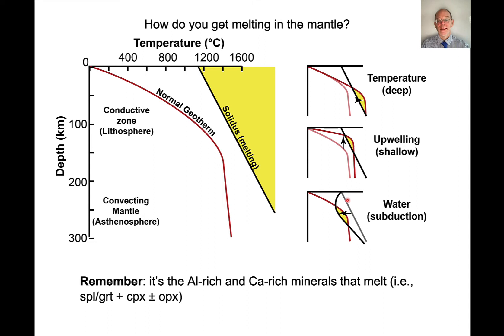There's a third way: adding water to the system. The solidus shown so far is for dry peridotite. If we add water, the solidus shifts to a lower temperature shape. It becomes possible for this wet solidus to intersect a normal geotherm — or even a cooler geotherm — and create melting. That's what happens in subduction zones, which we'll discuss in a later class. It is the addition of water that lowers the solidus temperature and allows melting to occur.